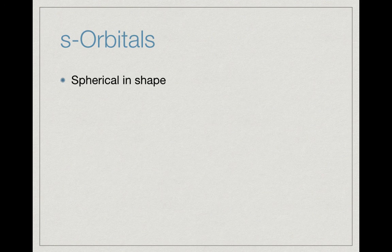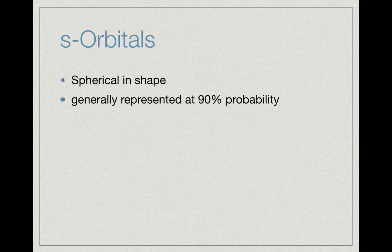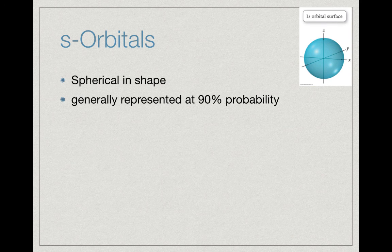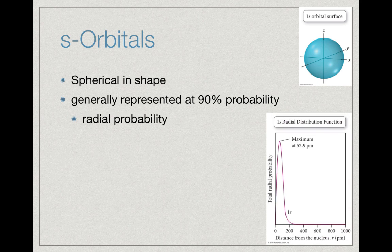S orbitals are generally spherical in shape. For most orbitals, regardless of type, we usually report those at a 90% probability—we have a 90% probability of finding our electrons somewhere in that sphere. There's a 10% probability the electron will be somewhere outside that sphere, but we can't really do a 100% probability. We look at something called radial probability.